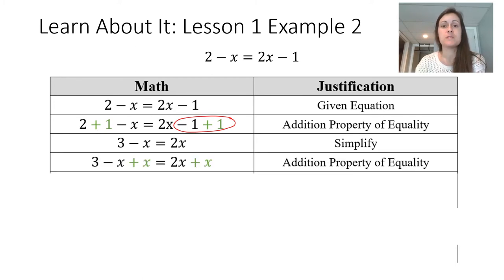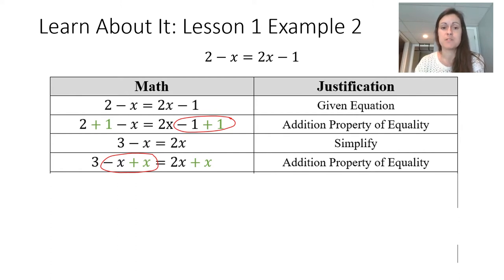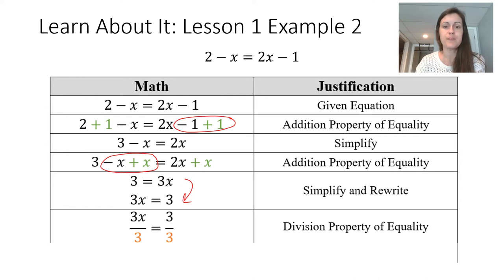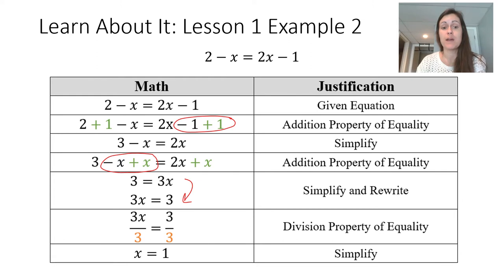I apply the addition property of equality again, this time adding x to both sides — again, a zero pair shows up, just as it did with the algebra tiles. Simplifying gives the equivalent equation 3 equals 3x, which can be written as 3x equals 3. I now apply the division property of equality to find the value of 1x: x equals 1. This is one way to use the properties of algebra to solve this equation, but make sure to look for another approach as well.